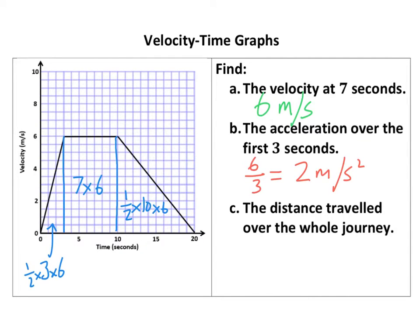So if I work all of those out, half times 3 times 6 is going to be 9, plus 7 times 6, 42, plus half times 10 times 6, 30. Add all them up, and you should get, what's that, 51, 81 metres.